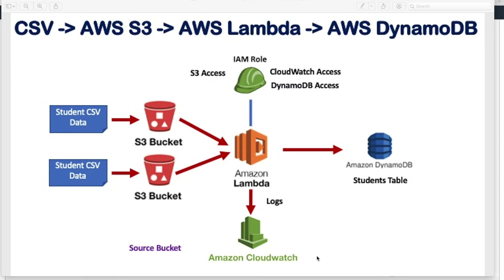I'll set up one design where we have an S3 bucket, Lambda, and DynamoDB. I will put one CSV file in the S3 bucket, and the moment the S3 bucket gets the CSV it will trigger an event that will go to Lambda. Lambda will read the data from the CSV and push it into DynamoDB. So the flow will be: CSV → S3 bucket → Lambda → DynamoDB.